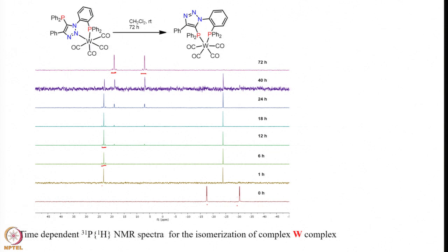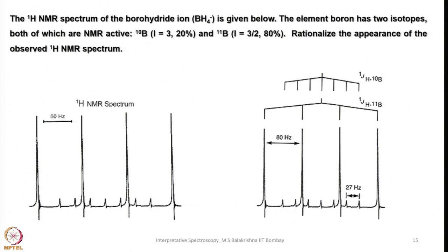So let me stop here and continue in my next lecture with more interesting examples, with emphasis on boron, mercury, and including 19F NMR spectra of some of these mixed NMR nuclei compounds. Until then, have an excellent time and enjoy the Interpretive Spectroscopy course. Thank you.